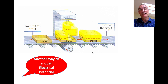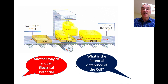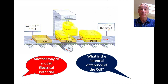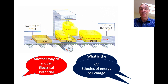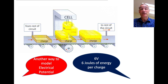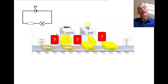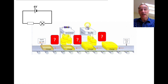Now let's have a look at a different model - this one has a conveyor belt, with charges and energy being delivered as boxes. Have a look at the model and decide what you think the voltage - the potential difference - of the cells is. It's six volts, because this model gives six joules of energy per charge, six boxes - could be boxes of cereal. As it goes around the circuit, that six joules of energy is shared between the bulb and the resistor. Have a look and decide what the potentials are at each point.